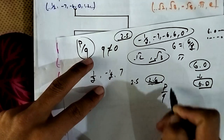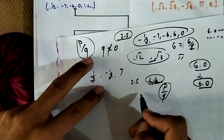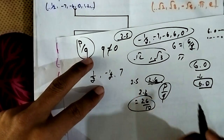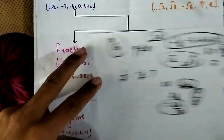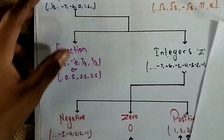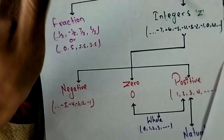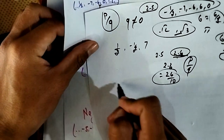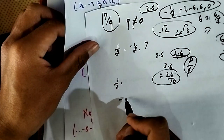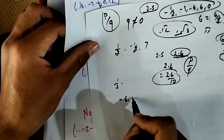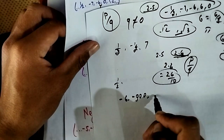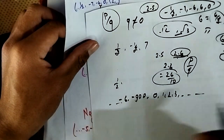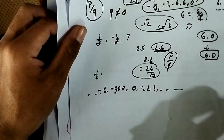A number like 2.6 can be written as P by Q — for example, 26 by 10. So any terminating decimal can be expressed as a fraction. Integers are also part of the rational number system. Examples include minus six, minus seven, zero, one, two, three — all are rational numbers, extending to infinity.